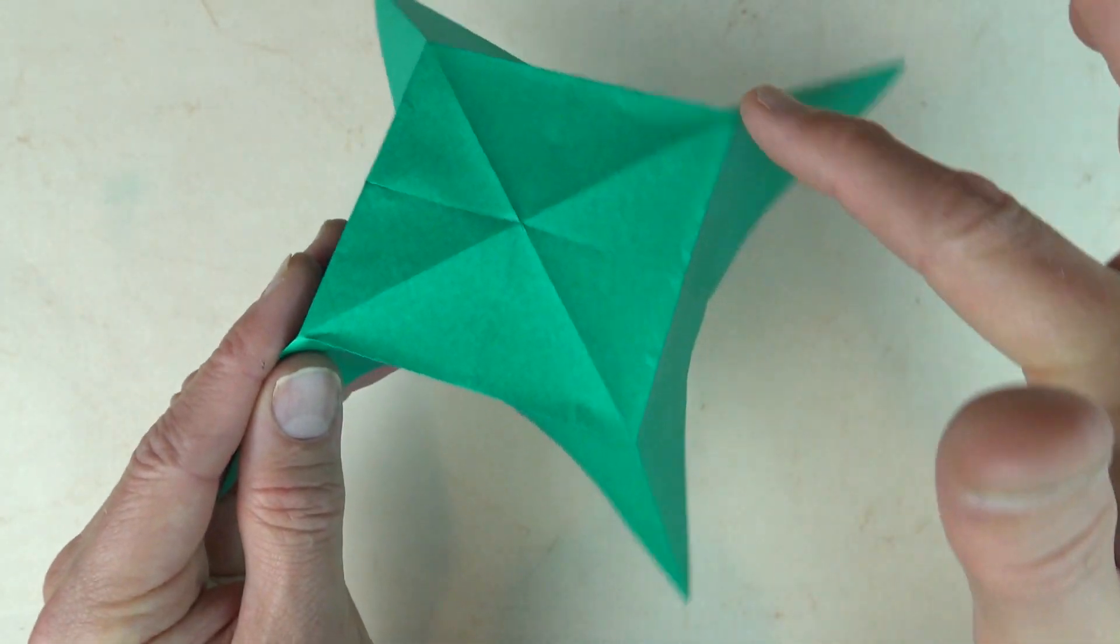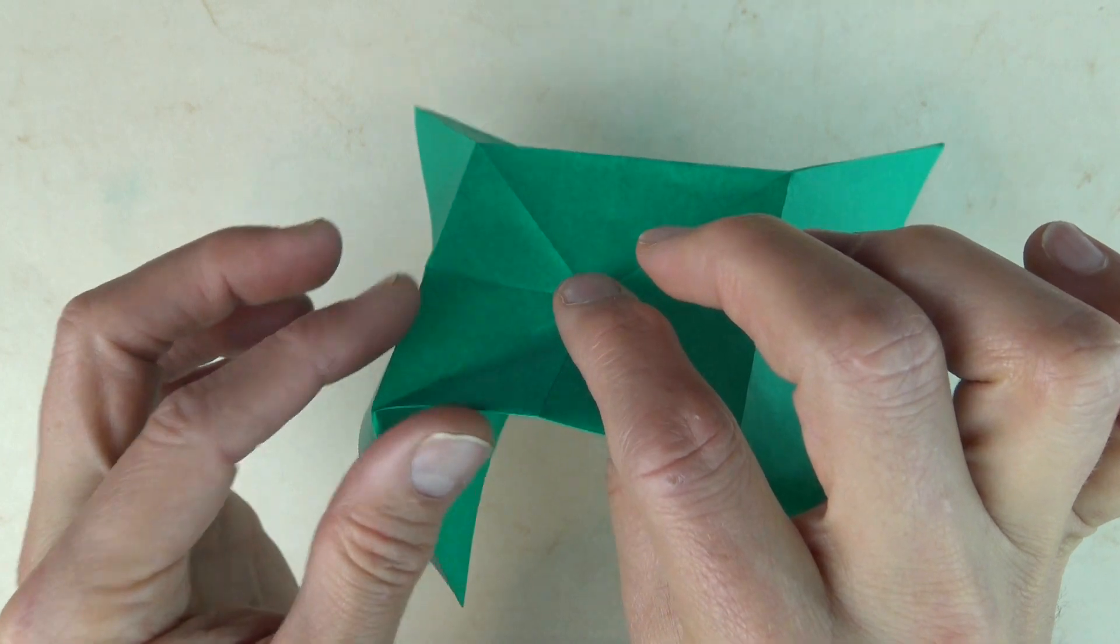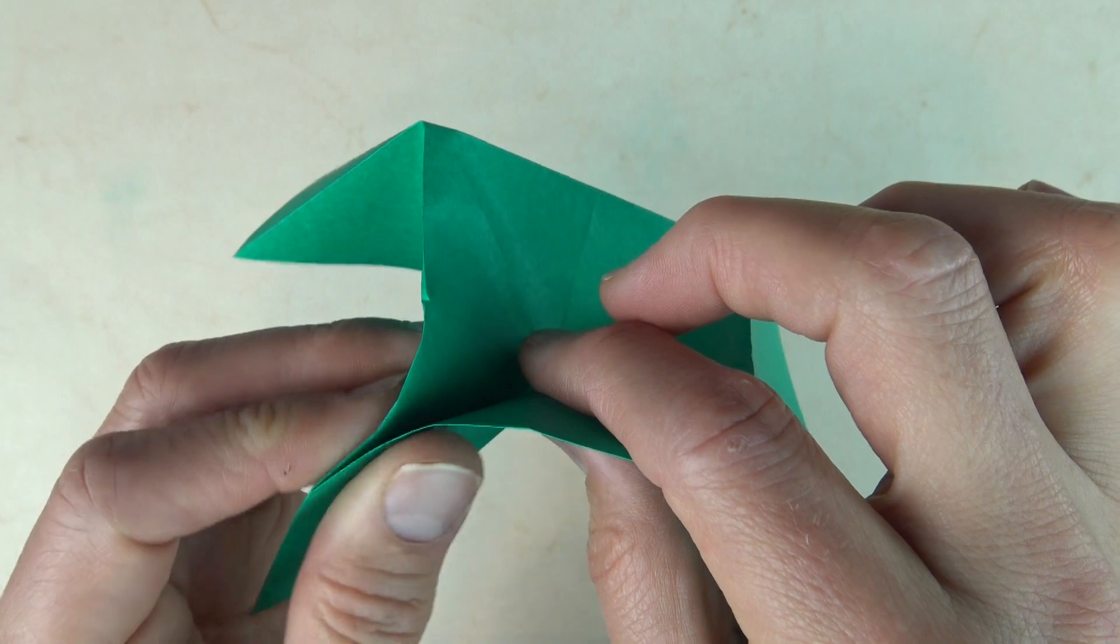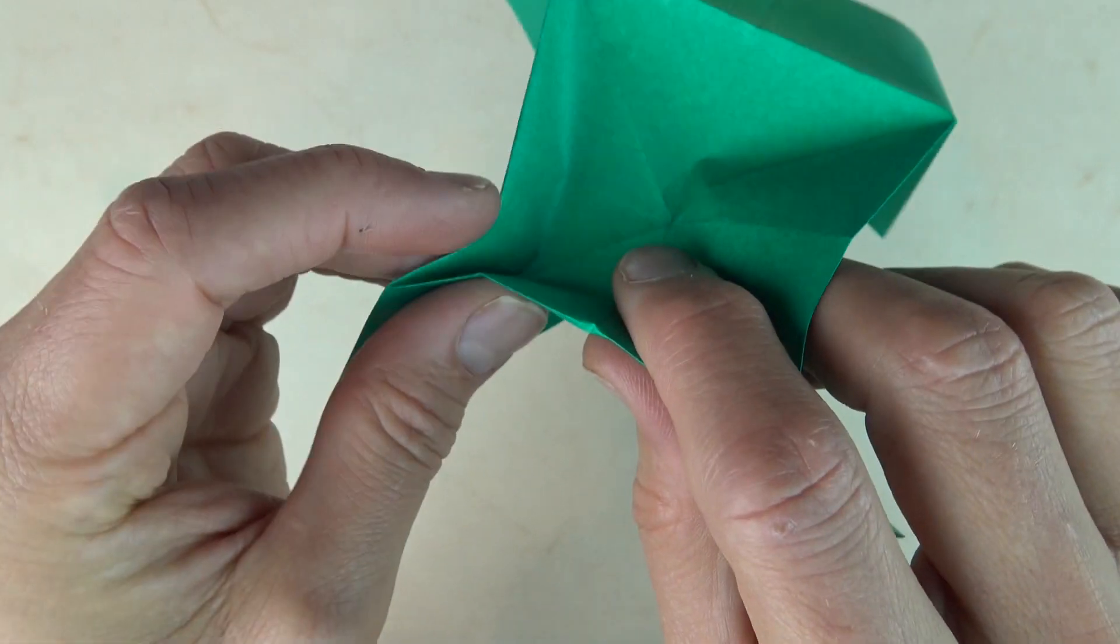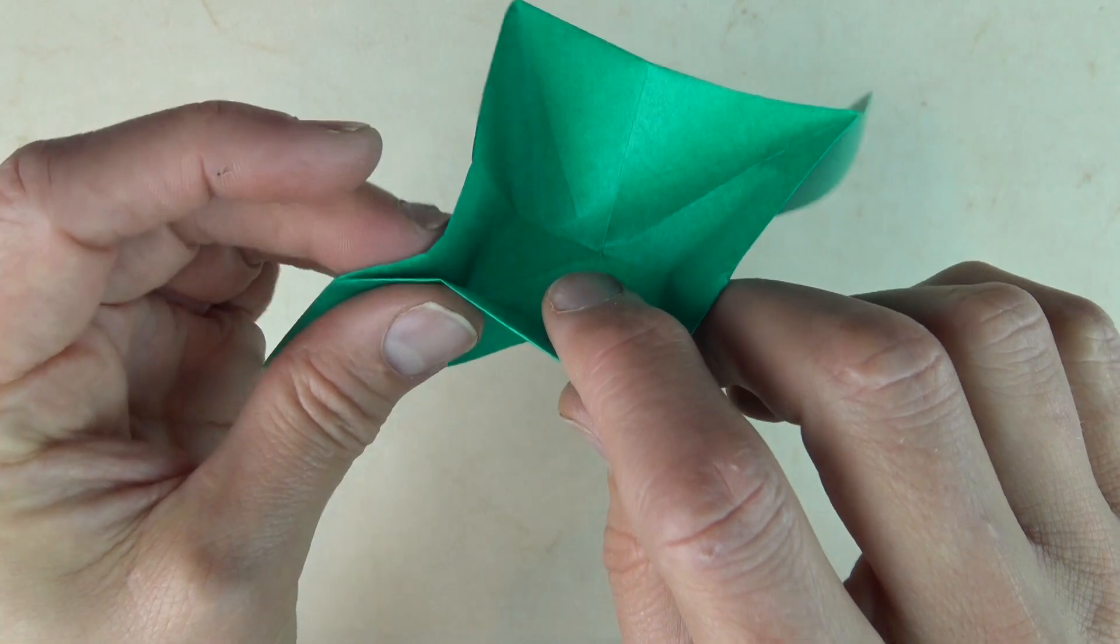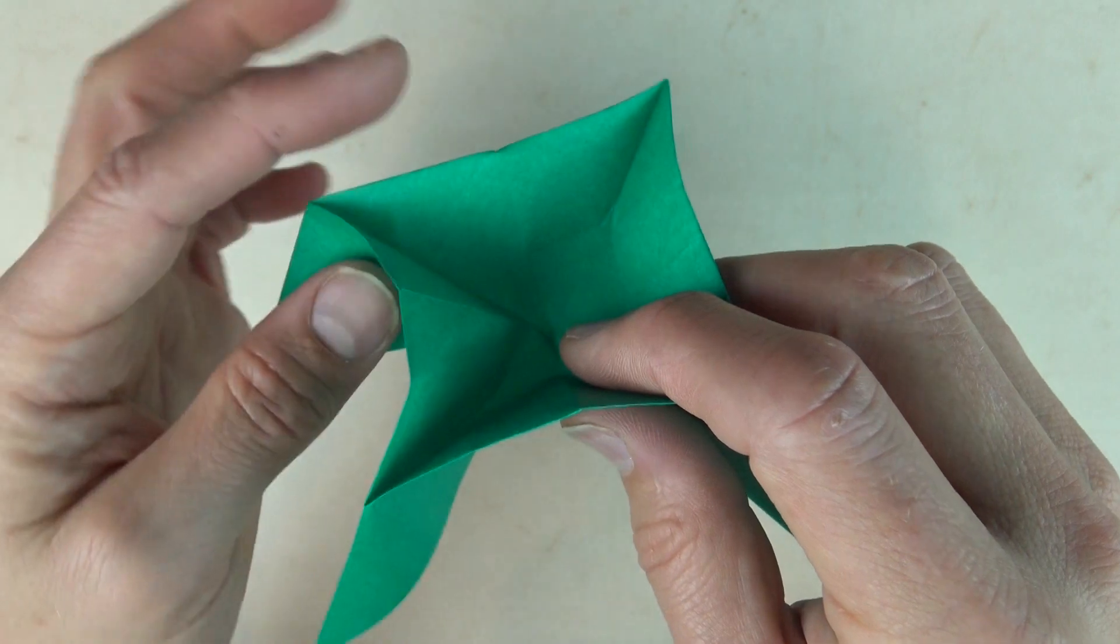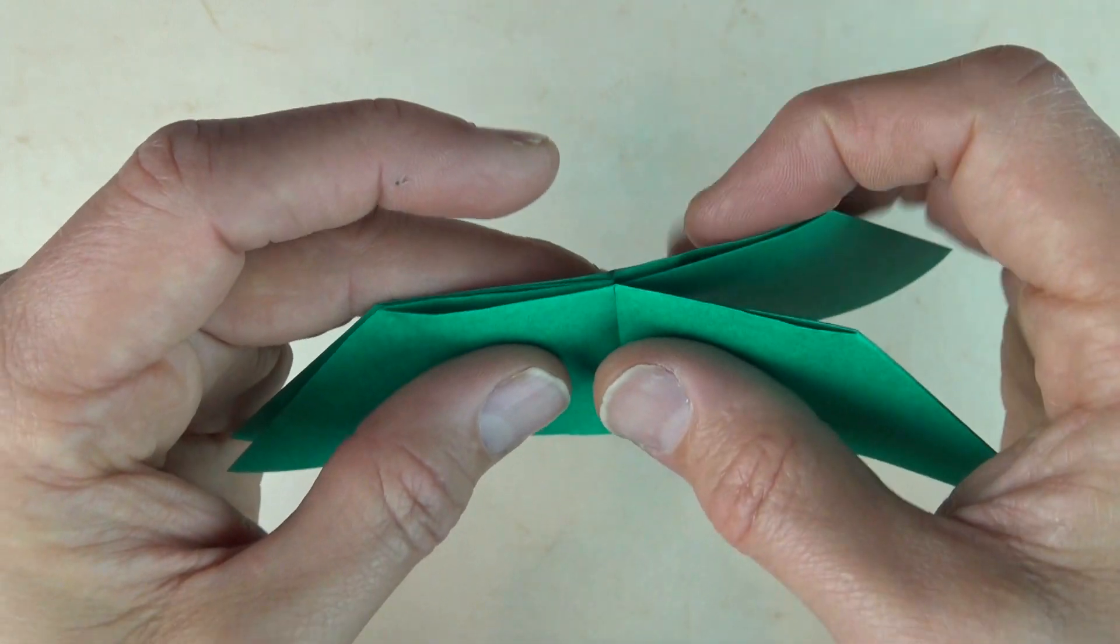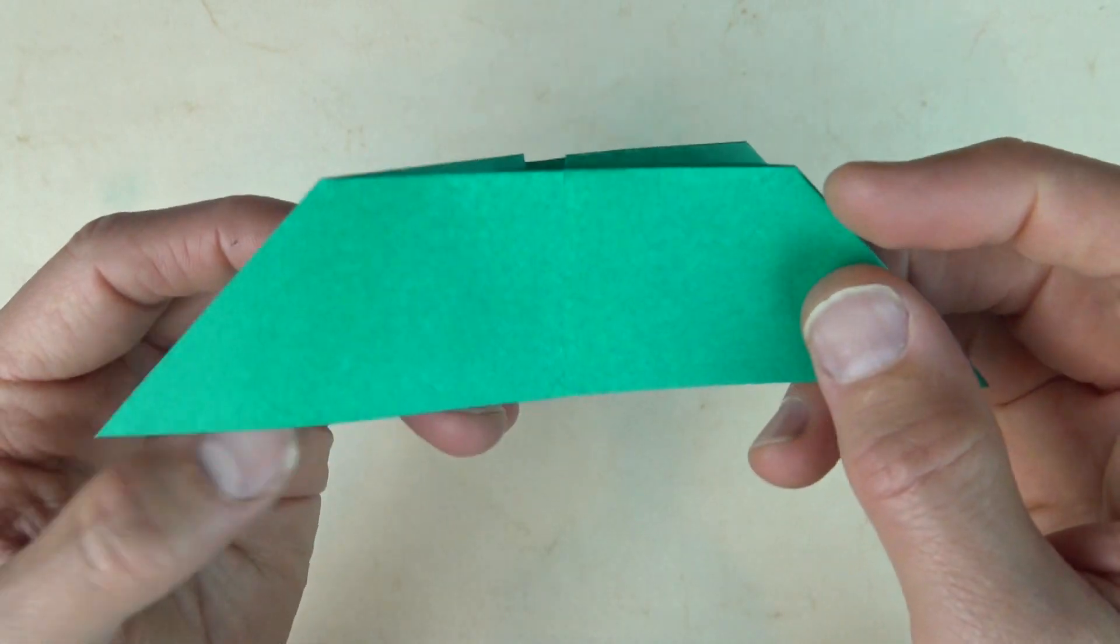So here we have the square of folds. And now press the middle in and pinch these two edges together. And here. And here. And here. And now push the middle in again. And make all of those folds at the same time. And flatten. And here we have the sunken water bomb base.